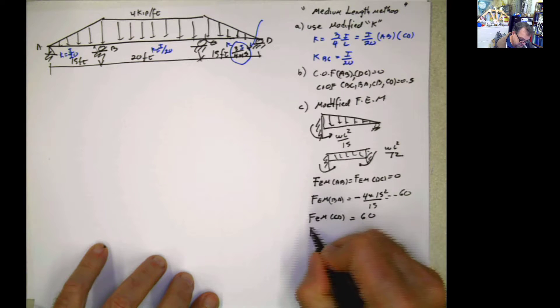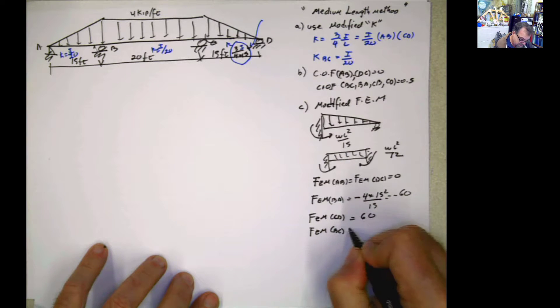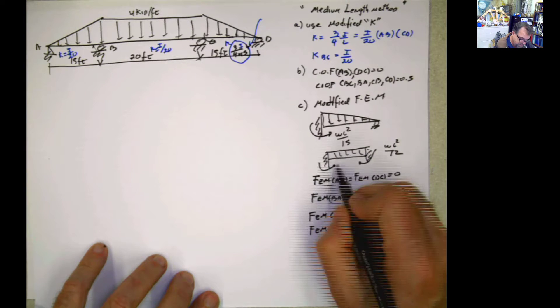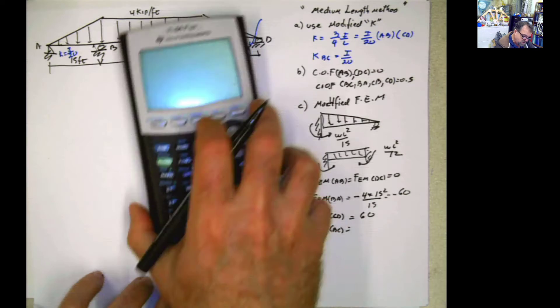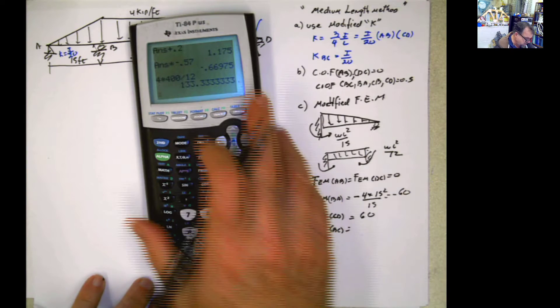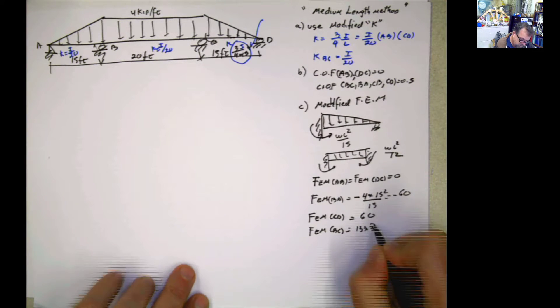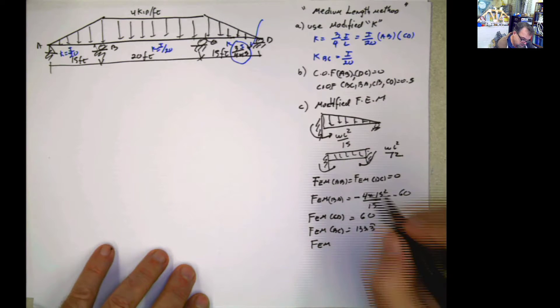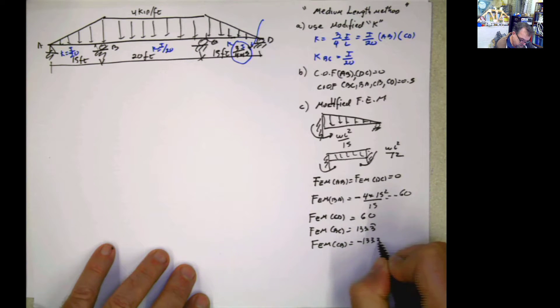Now fixed end moment BC, it's going to be WL squared divided by 12, and it's going to be positive. W is 4, 4 times L squared. L squared is 400. So 4 times 400 divided by 12 is 133.3. And fixed end moment CB, it's going to be negative 133.3.